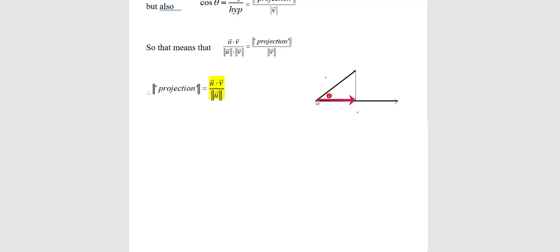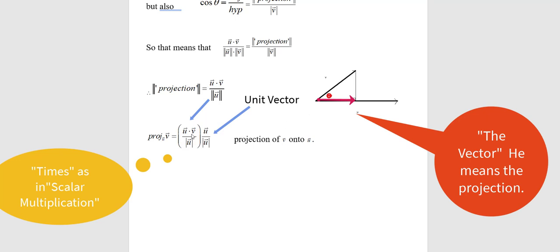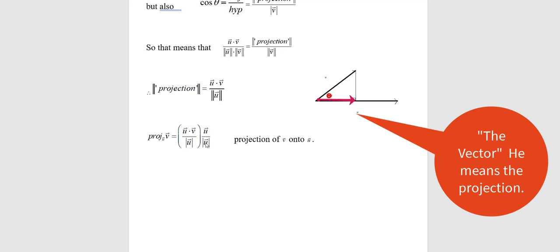And if I multiply the length times the unit vector I will actually have the vector. So remember this here is a scalar. Scalars are numbers. This here is a vector length one. Number times that vector will give me this vector.